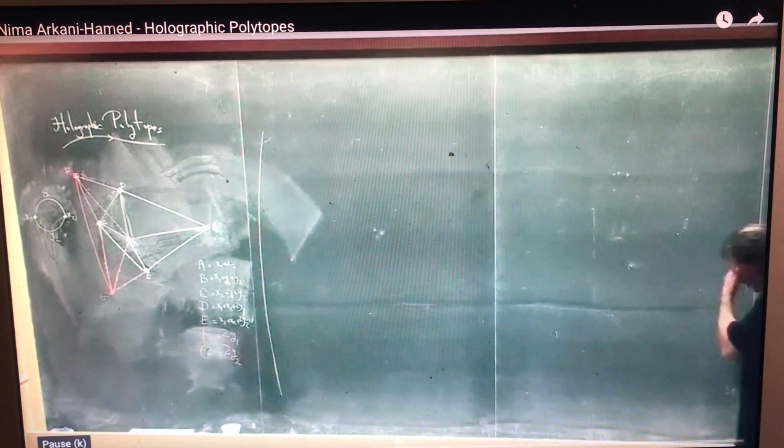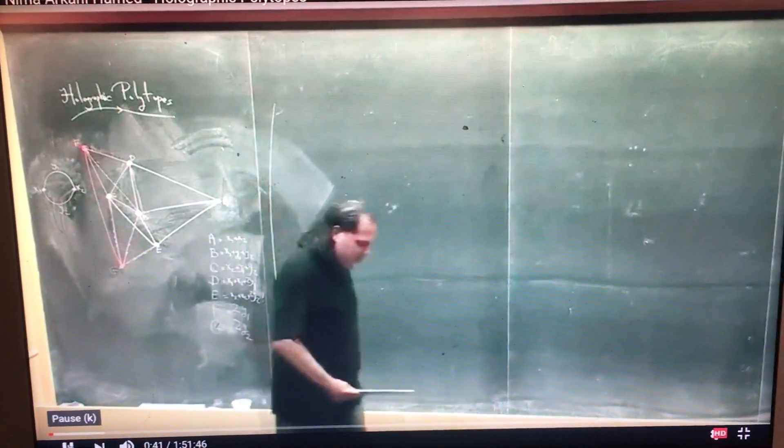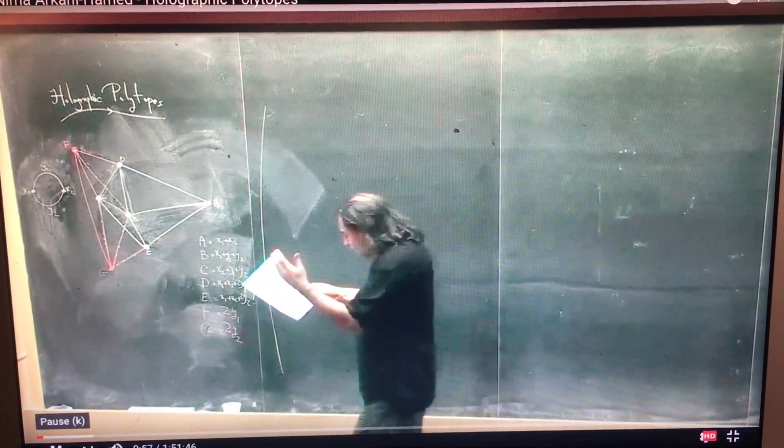But of course, at this workshop and not just at this workshop, everywhere there's lots of discussions of the idea of emergent space, emergent spacetime. I've believed myself for a very long time that ultimately, it's not that spacetime emerges from the quantum mechanical system, but that spacetime and quantum mechanics both have to emerge tied together, inevitably tied together hand in hand from some other structure.